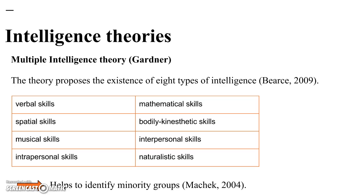Musical skills is sensitivity to pitch, melody, rhythm, and tone. Interpersonal skills — at the intrapersonal level — is the ability to understand oneself. Mathematical skills is the ability to carry out operations. Bodily-kinesthetic skills is the ability to manipulate objects and be physically adept. Interpersonal skills is the ability to understand and interact with others effectively.